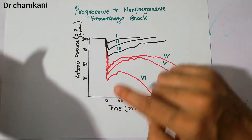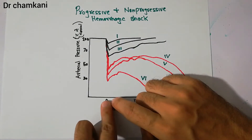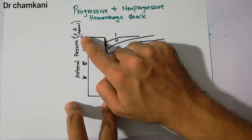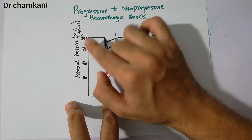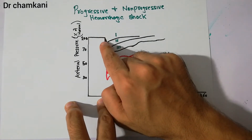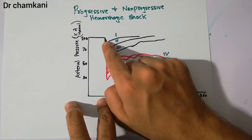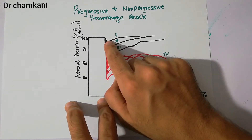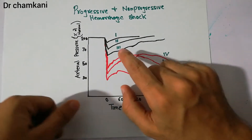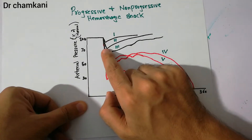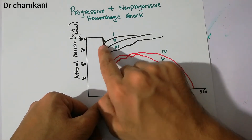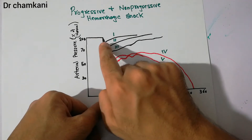At time zero, we bleed the first group of animals whose arterial pressure was normal at around 100 mmHg. The amount of blood removed from this group was very small, causing the arterial pressure to drop to a certain level before bleeding was stopped. In the second group, the amount of blood removed was a little larger than the first group, so the arterial pressure dropped a bit more compared to the first group.